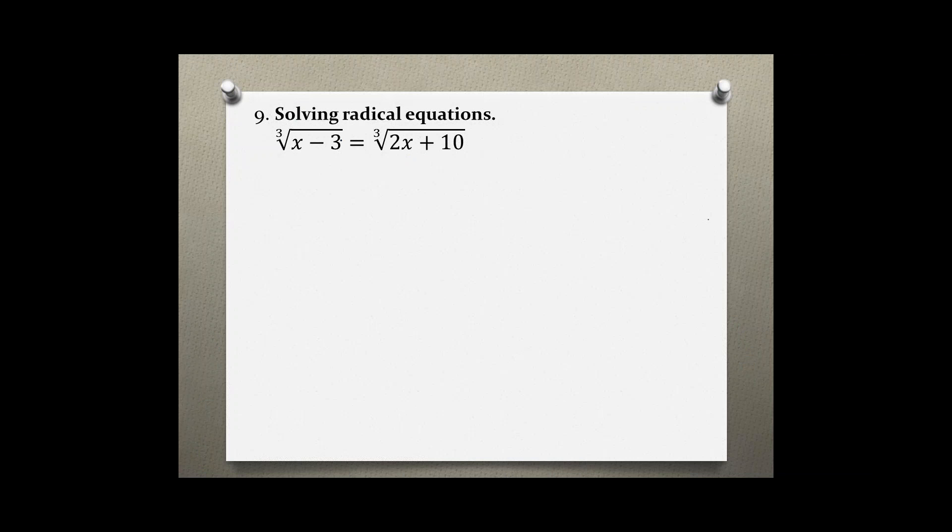Because this cube root is already isolated, we can use the property of cubing both sides. And that would take care of the cube root because the index and the power are the same, they cancel each other out. And we are left with x minus 3 equals 2x plus 10.